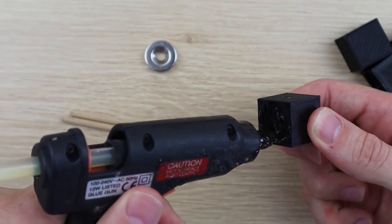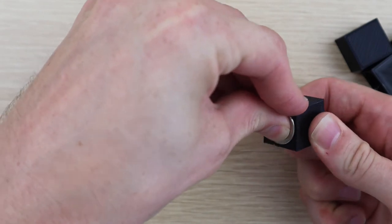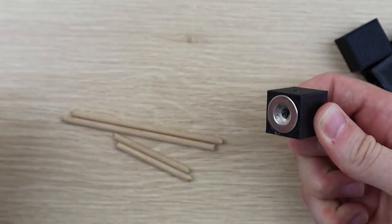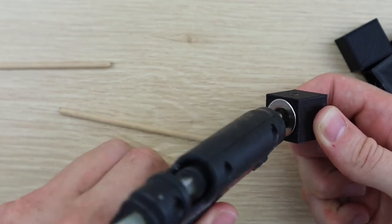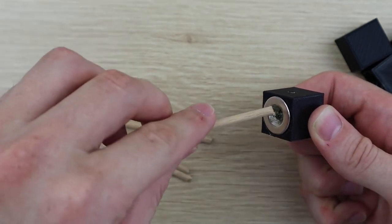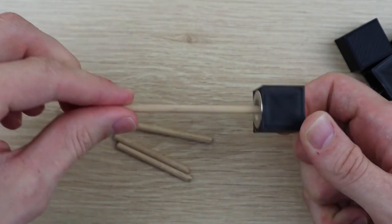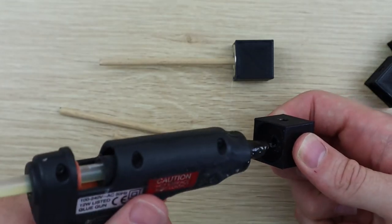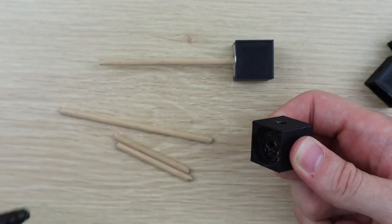Fit the flat side of the magnets into the corner block and then push one end of the dowel into the center. Do the same on the opposite side so that the two magnet poles oppose each other.